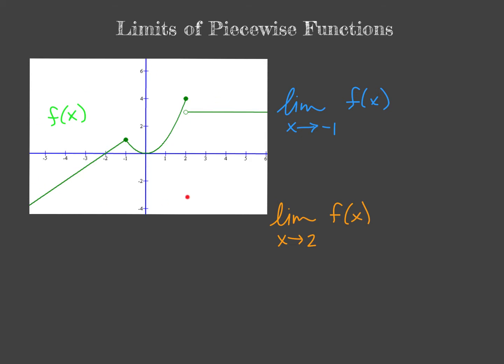Alright so we have a piecewise function here that's graphed, f of x. We can see that it has three separate pieces and the breaking points are at negative 1 and at 2.